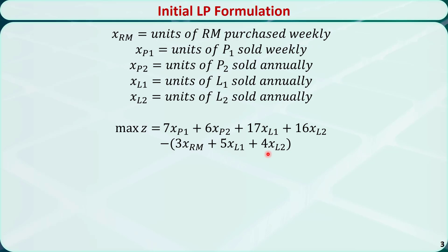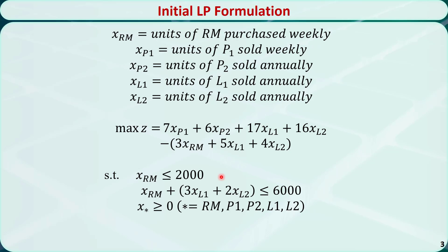As for the constraints, we know no more than 2,000 units of raw material can be purchased weekly, and no more than 6,000 labor hours can be used each week. x_RM represents the total labor hours needed to process the raw material to get product 1 and product 2. 3 times x_L1 is the total labor hours needed to further process product 1 to get luxury product 1. 2 times x_L2 is the total labor hours needed to further process product 2 to get luxury product 2. All decision variables are greater than or equal to 0.